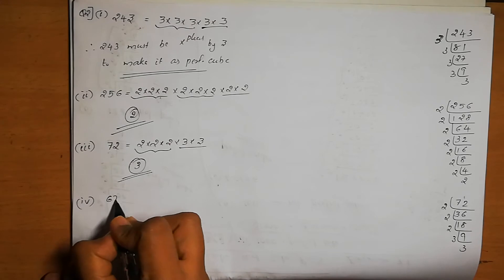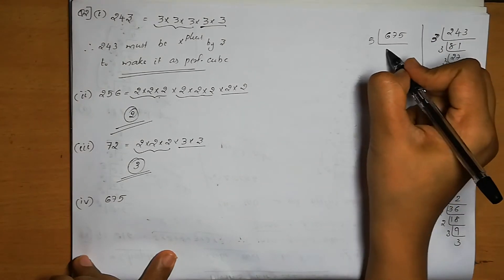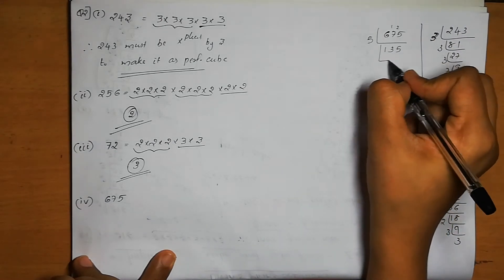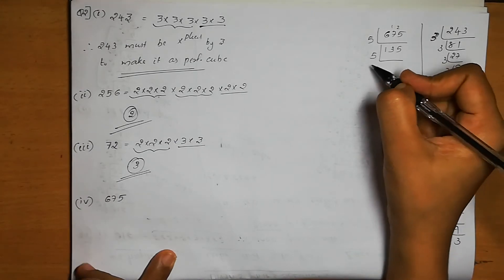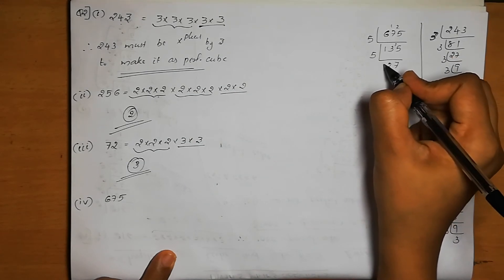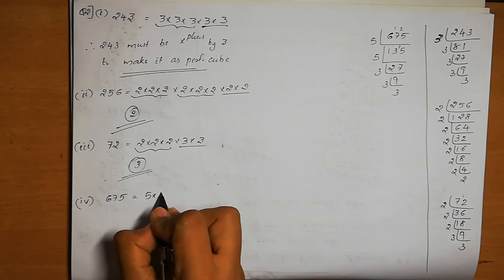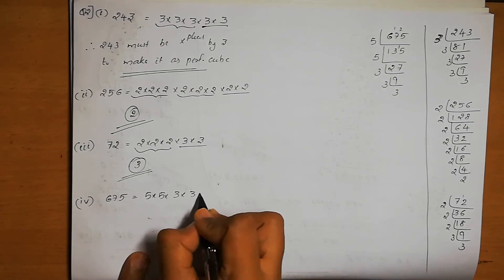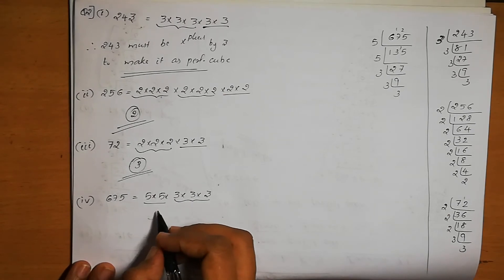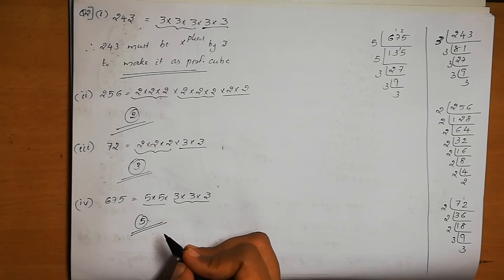Fourth number is 675. Its prime factors are 5 × 5 × 5 × 3 × 3. The three 5s form a triplet, but the pair of 3s needs one more 3. Wait — the 3s form a pair but 1 five group is actually complete, and 1 three is missing. Therefore, 675 must be multiplied by 5 to make it a perfect cube.